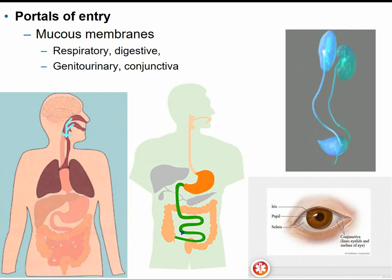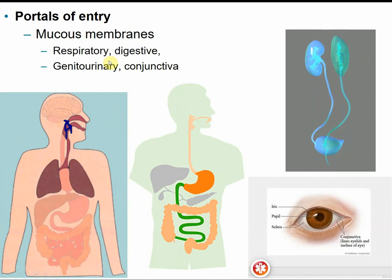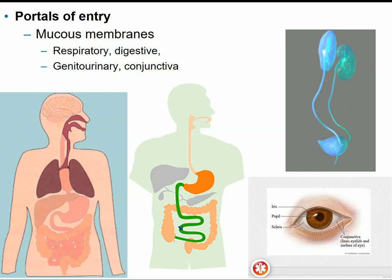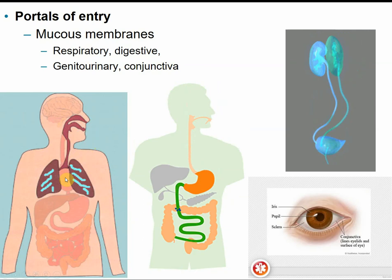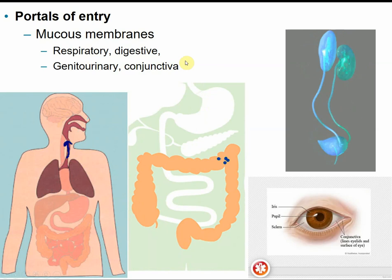Most microbes have a preferred portal of entry — a way that they're able to gain entrance inside of the host. Mucous membranes are one of the most common portals of entry. All of our open body cavities are lined with these mucous membranes, so the easiest way to get into the body is right through the front door. The respiratory tract is usually the easiest — just by simple inhalation — and then it has access to the rest of the body.